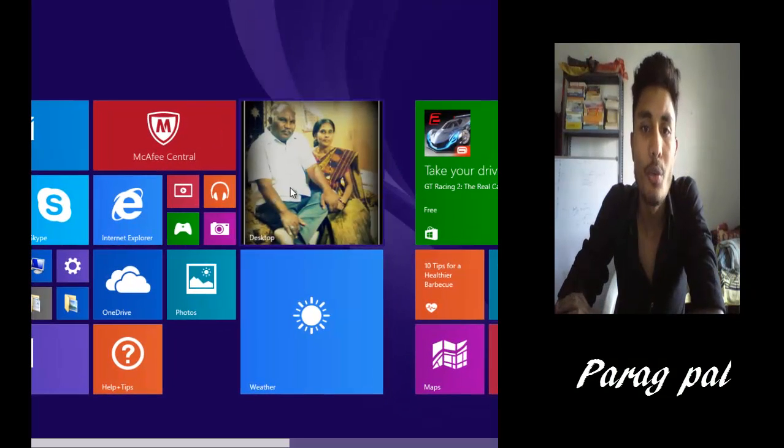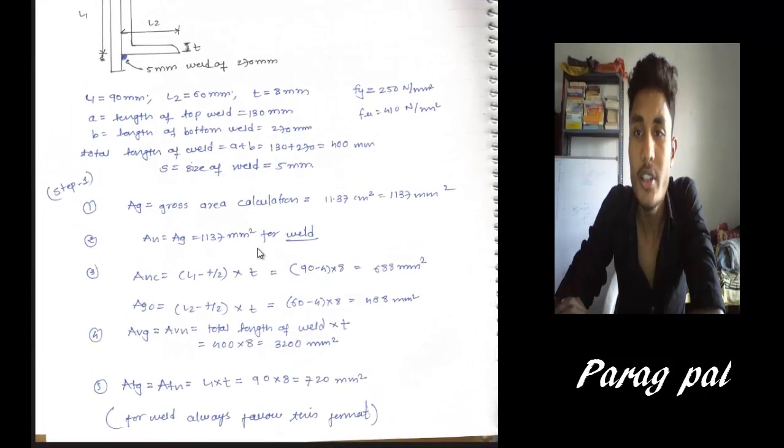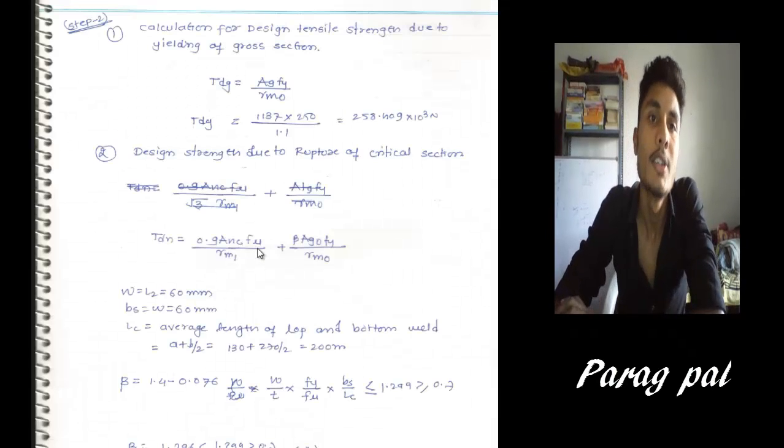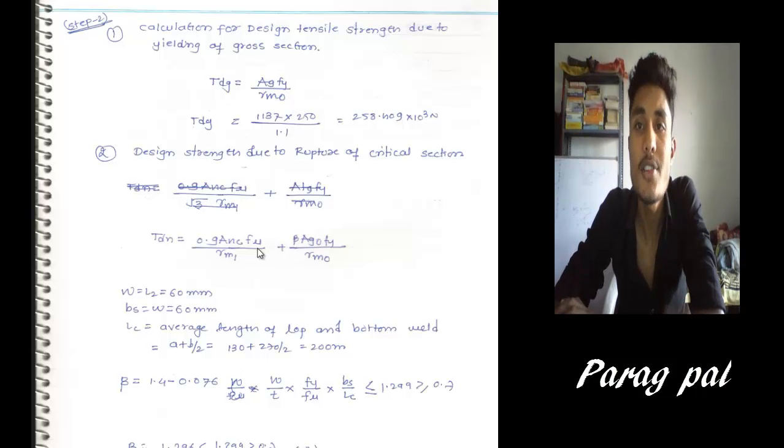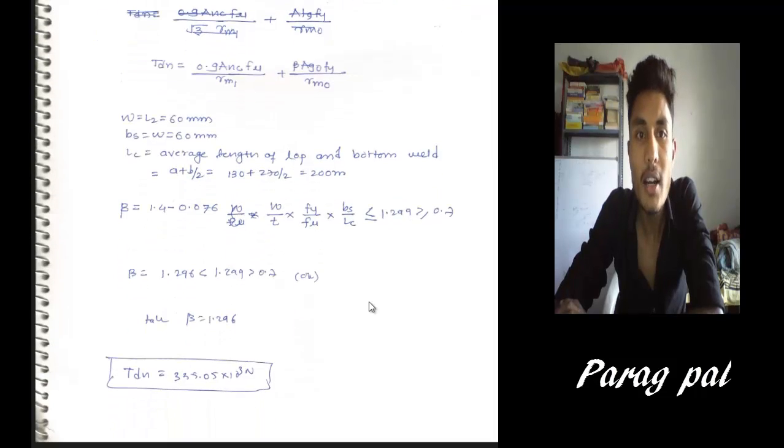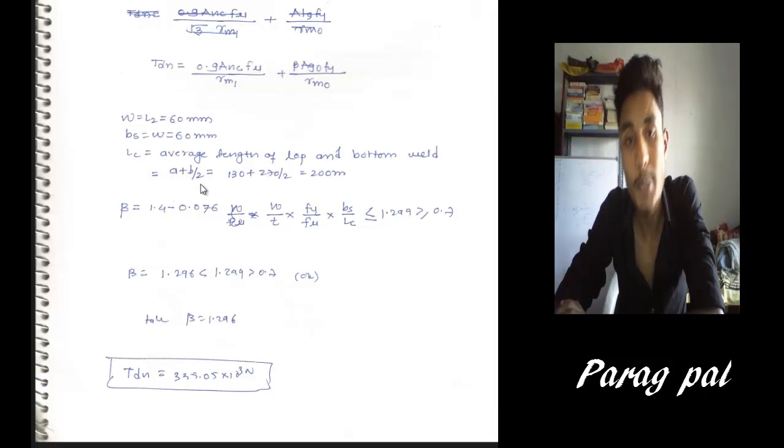Now I go for my next PDF file. Actually I wanted to change this procedure because every time I have to go there and open a new file. Now, calculation for design tensile strength due to the yielding of gross section. Same procedure you have to do. First, page number 32, page number 33, same value you have to use, but here the W, F, U, Beta, R changes. The value of W equals L2 in the welded connection. Bolted connection is different. BS equals W, LC equals A plus B by 2.